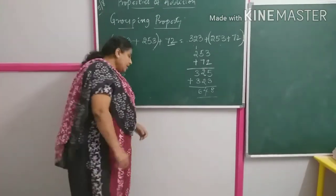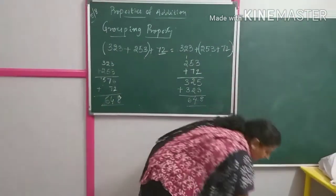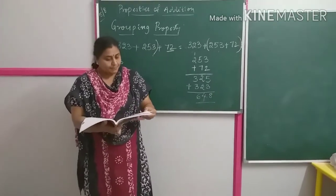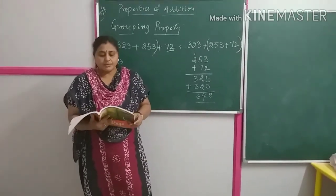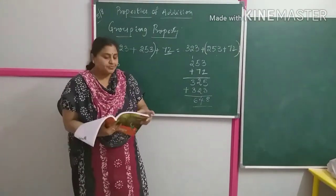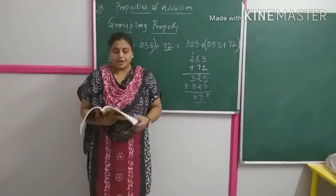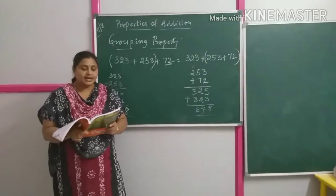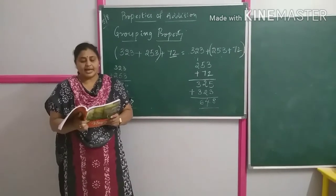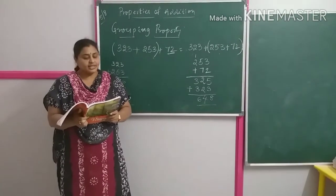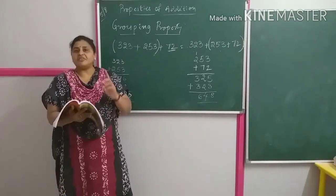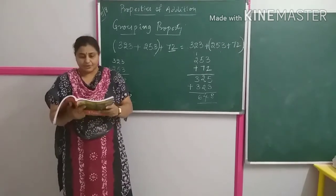Next, coming to word problems. You have word problems in your Term 1 textbook on page number 90. For the word problems, you have to frame the sentences and solve them. The first problem: there are 1,672 mango trees in an orchard and 1,296 trees in another orchard. How many trees are there in the two orchards?